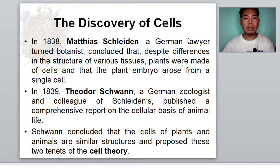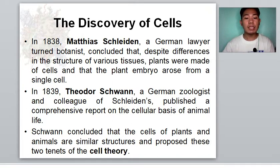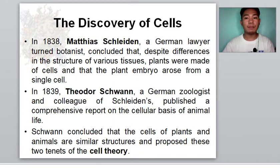It wasn't until the 1830s that the widespread importance of cells was realized. In 1838, Matthias Schleiden, a German lawyer turned botanist, concluded that despite differences in the structure of various tissues, plants were made of cells and that the plant embryo arose from a single cell. In 1839, Theodor Schwann, a German zoologist and colleague of Schleiden's, published a comprehensive report on the cellular basis of animal life. Schwann concluded that the cells of plants and animals are similar structures, and composed these two tenets of the cell theory: all organisms are composed of one or more cells, and the cell is the structural unit of life.